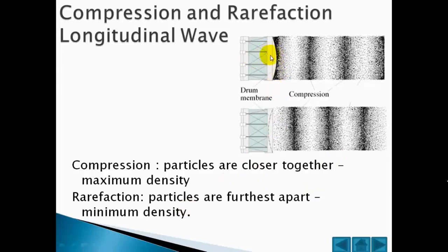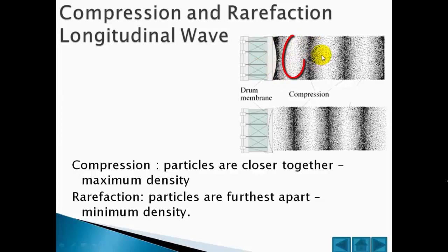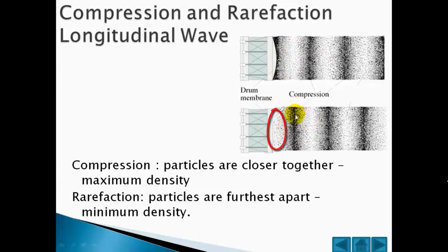Here we have a graphic of a sideways drum where the skin is vibrating. On the diagram at the top, the drum skin is displaced to the right and that causes a point of maximum density or compression. To the right of this we have an area of low density or rarefaction. On the bottom diagram the drum skin is displaced to the left, causing an area of low pressure or rarefaction, followed by an area to the right of high pressure or compression.